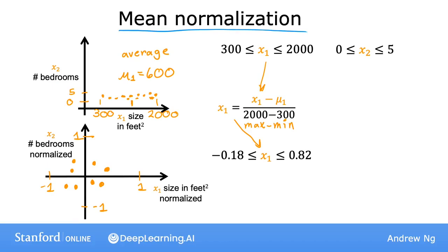Similarly, to mean normalize x2, you can calculate the average of feature 2, and for instance, mu2 may be 2.3. Then you can take each x2, subtract mu2, and divide by 5 minus 0, again the max 5 minus the min which is 0. The mean normalized x2 now ranges from negative 0.46 to 0.54. So if you plot the training data using the mean normalized x1 and x2, it might look like this.